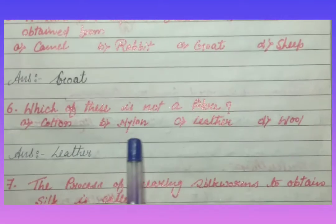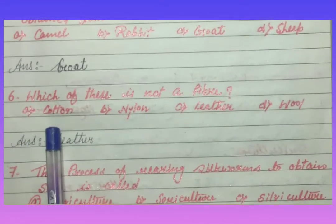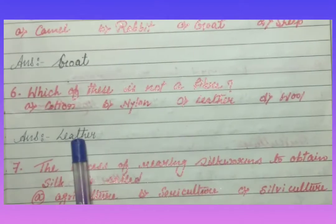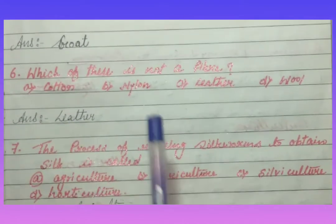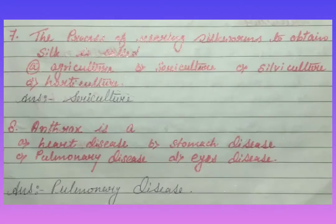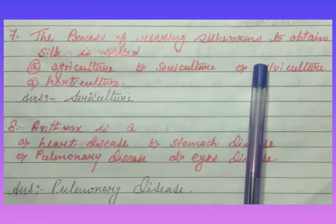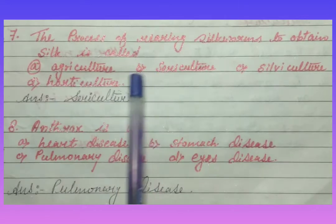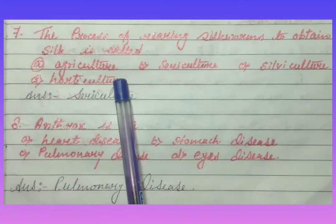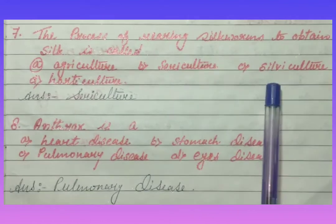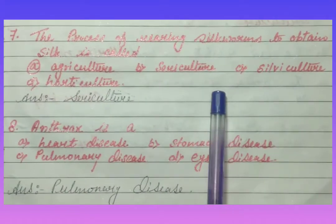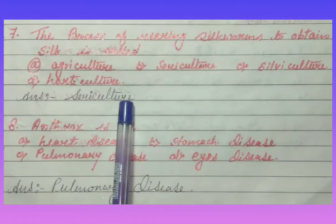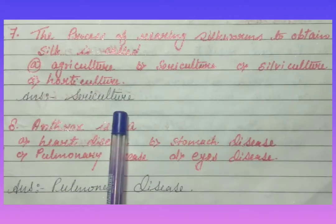Which of these is not a fiber? Cotton, nylon, or leather. The answer is leather. The process of rearing silkworms to obtain silk is called sericulture, sylviculture, or horticulture. The answer is sericulture.